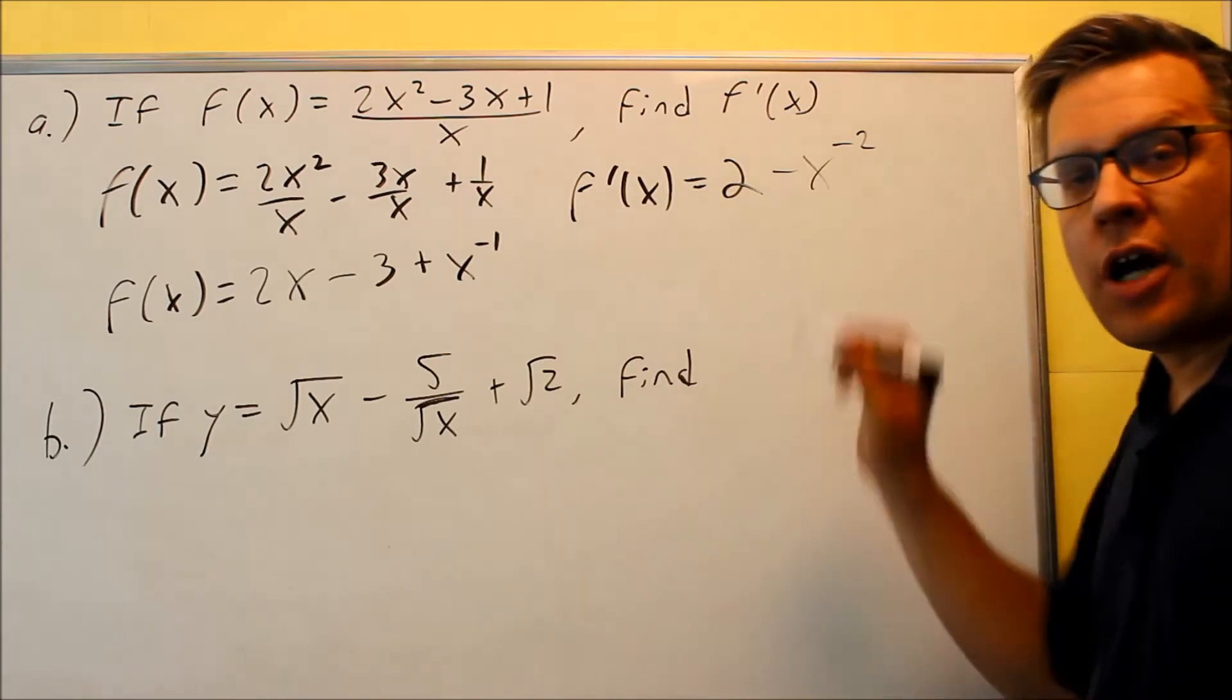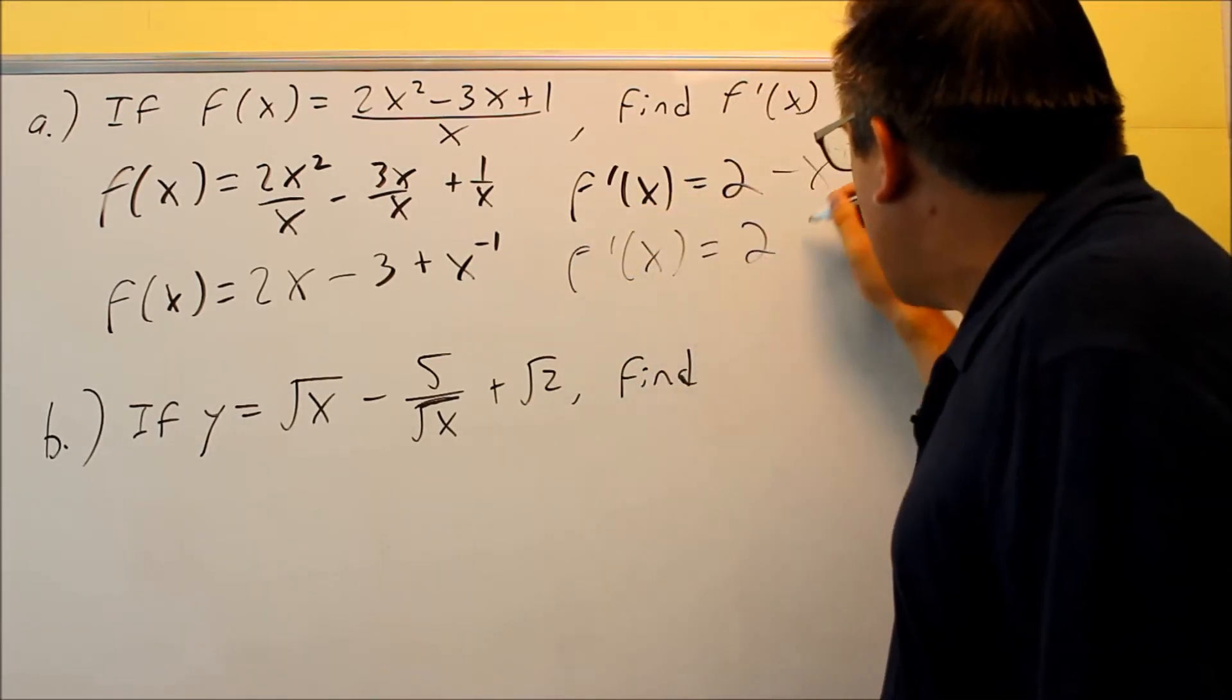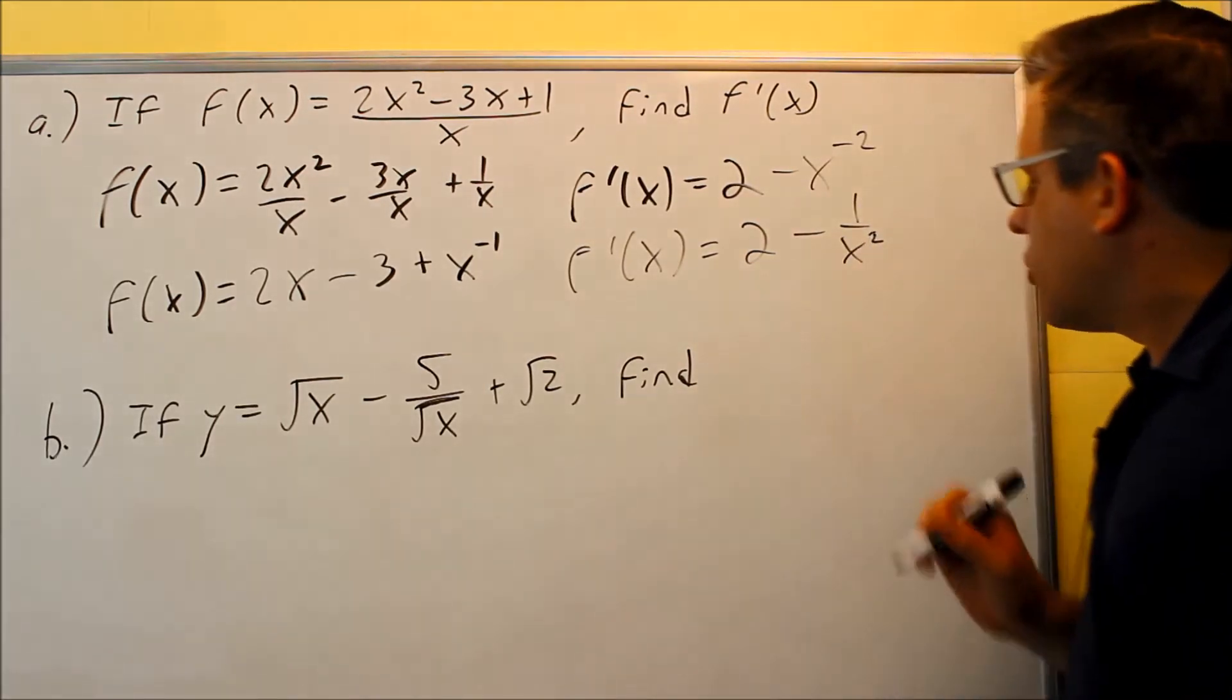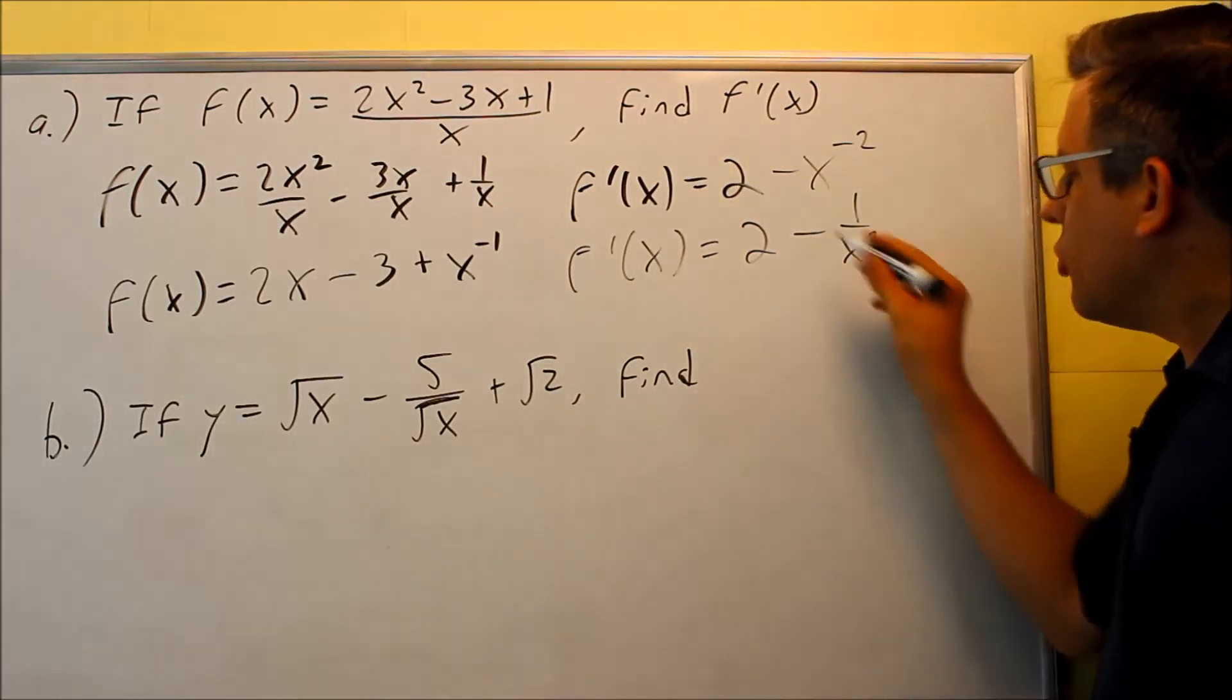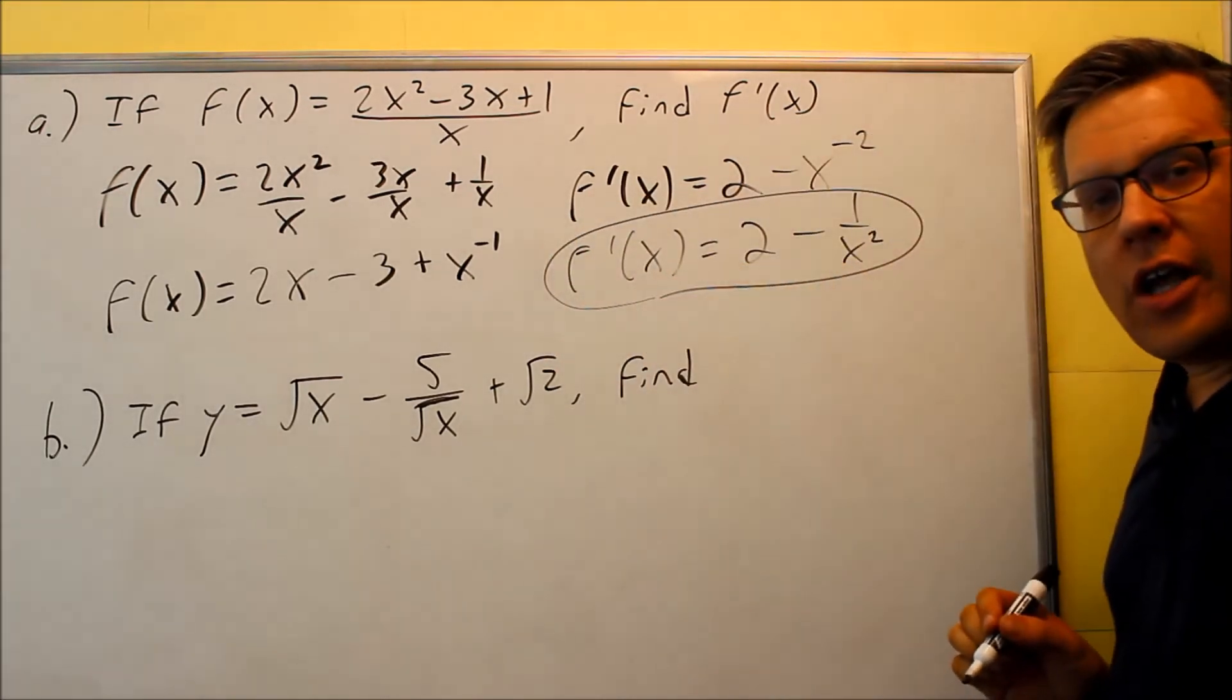We can rewrite this with positive exponents, and we get this. We get 2 minus 1 over x squared. That's your final answer for part A.